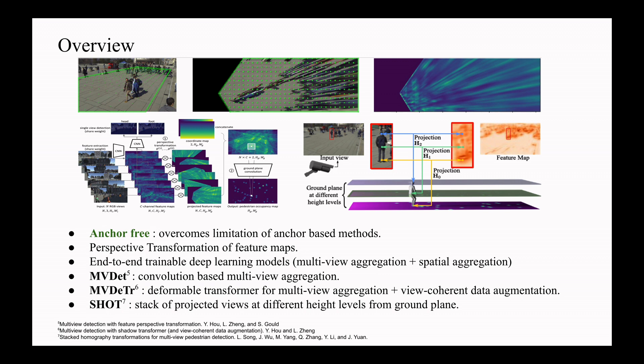MVDETR on the other hand uses deformable transformer for multi-view aggregation and suggests view-coherent data augmentation for training. SHOT predicts the occupancy map through soft selection module from the stack of projected views with different height levels from ground plane.